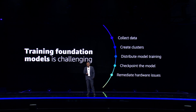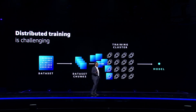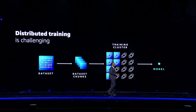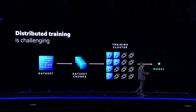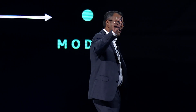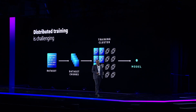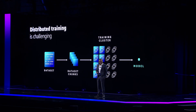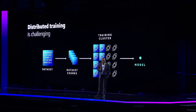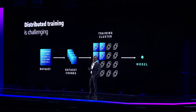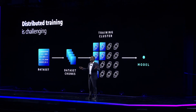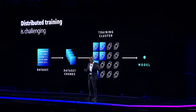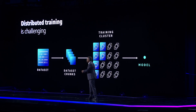Let me dive into some of these challenges to understand why it is so complex. Because of the massive size of these foundational models and the dataset used for training, developers need to split their data into chunks and load them into the individual chips in a training cluster — a distributed cluster with hundreds or even thousands of accelerators. In order to make efficient use of these compute and network resources, the distribution needs to be tailored to the characteristics of the data, your model architecture, as well as the underlying hardware configurations.